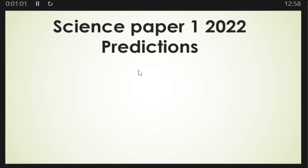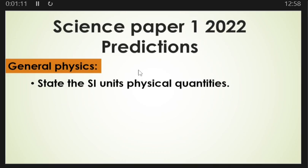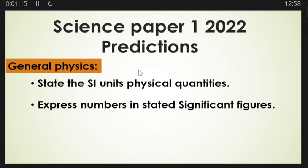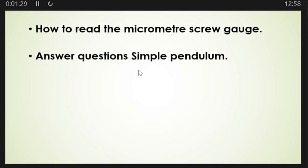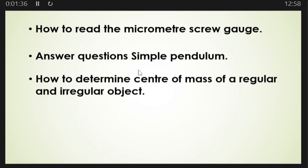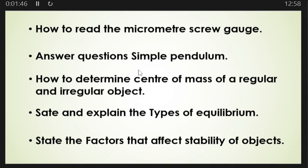Without wasting much of your time, let's go straight into the video. We'll start with general physics. Under general physics, you must be able to state the SI units for physical quantities, express numbers in stated significant figures, and express numbers in standard form. You must also be able to read the micrometer screw gauge, answer questions on a simple pendulum, determine the center of mass of regular and irregular objects, state and explain the types of equilibrium, and state the factors that affect the stability of objects.